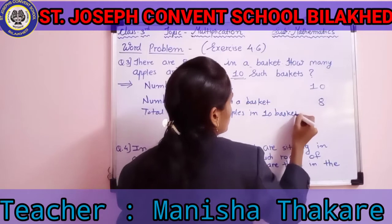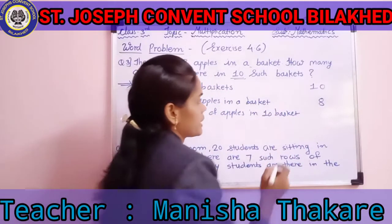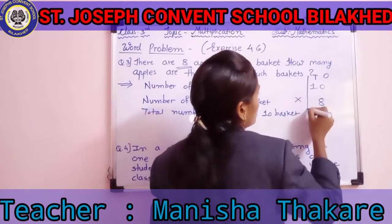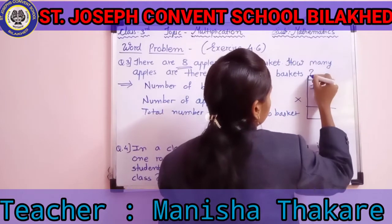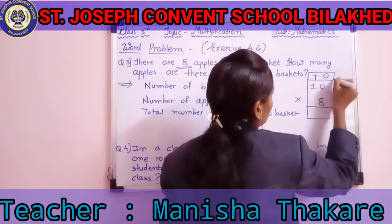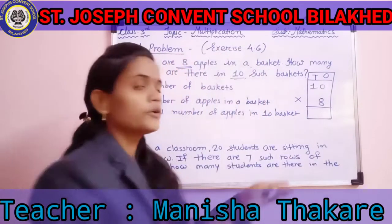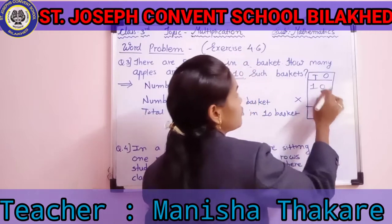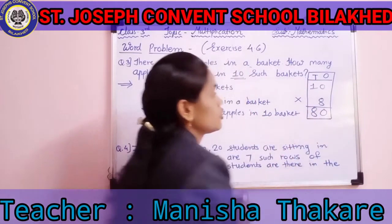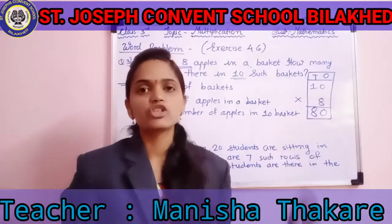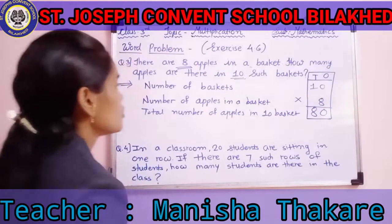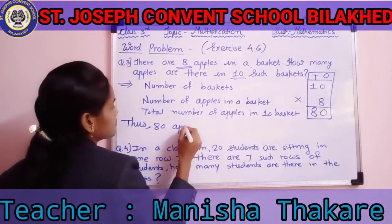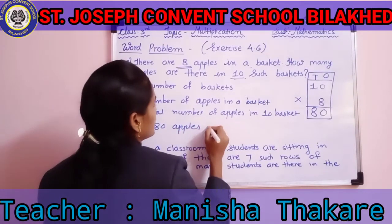Now we do the multiplication. This is the ones column and this is the tens column. We arrange the numbers. Using table 8: 8 zeros are 0, and 8 ones are 8. So 10 multiplied by 8 gives us the product 80. Our final line is: thus, there are 80 apples in 10 baskets.